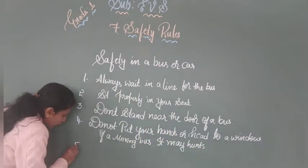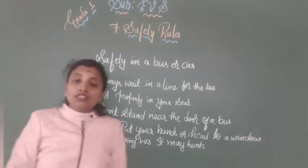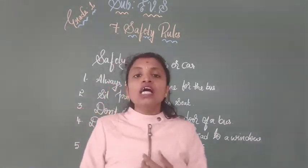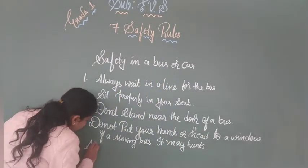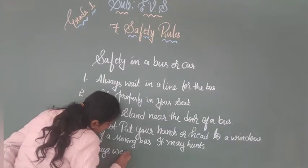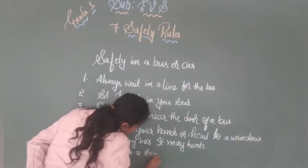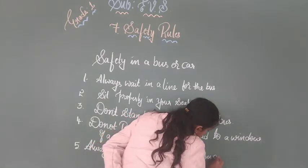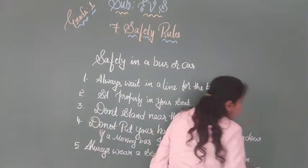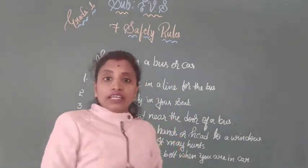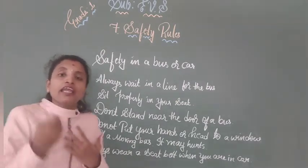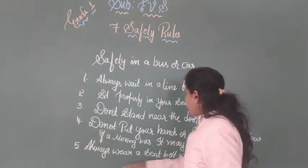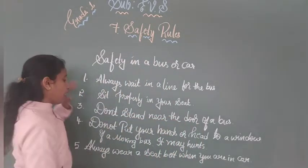The fifth point is: always wear a seatbelt when you are in a car. You should always wear a seatbelt — it may keep you safe in an accident. So, always wear a seatbelt when you are in a car. Any doubts about it?